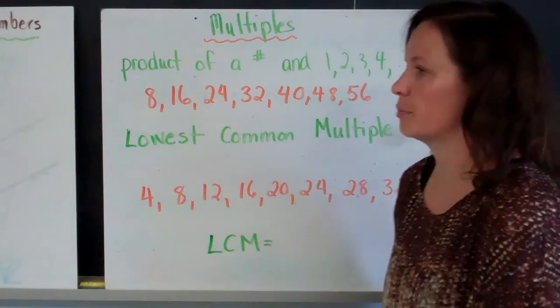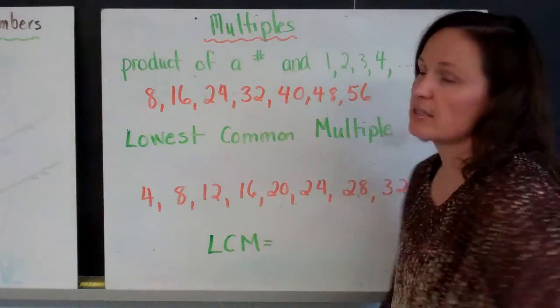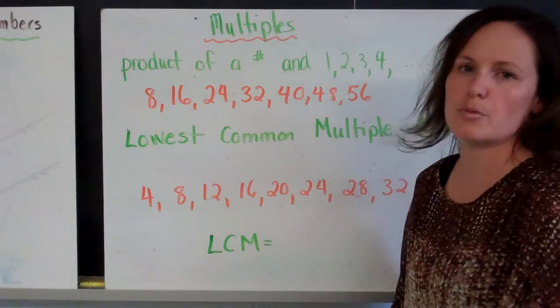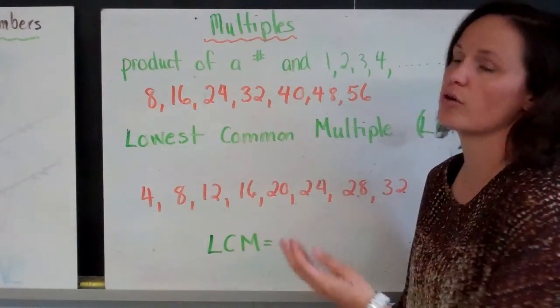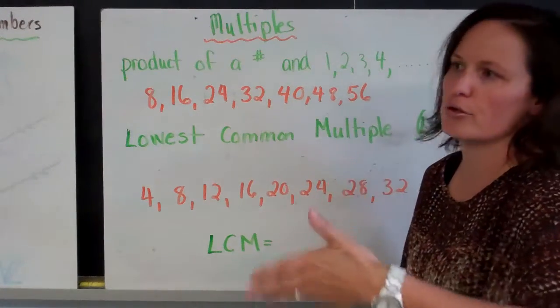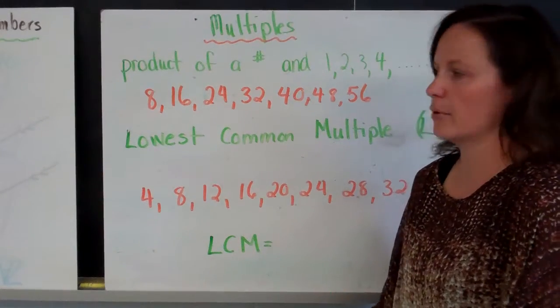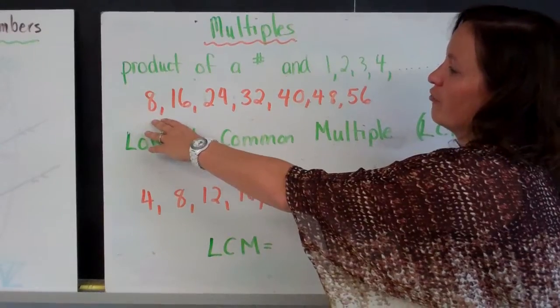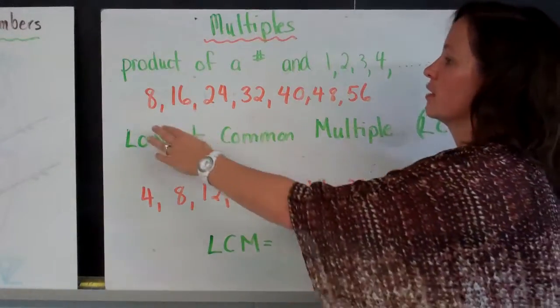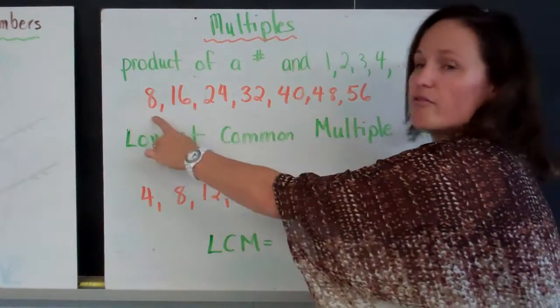So first, let's talk about multiples. Multiples sounds like the word multiplication, and this is the easiest way to remember it. A multiple is the product of a number when it's multiplied by 1, 2, 3, 4, 5, 6, 7, and so on. So if we think about our multiplication tables, let me use 8 as an example. If we simply do our multiplication table, these are all multiples of this original number.